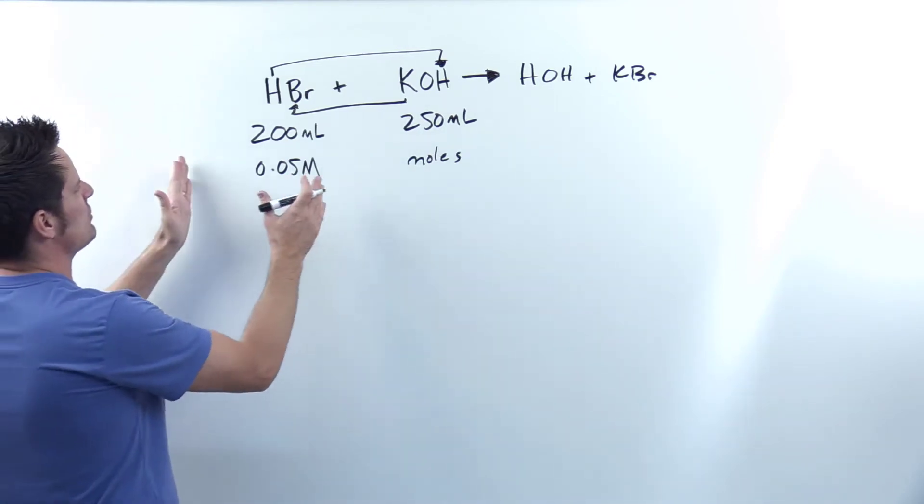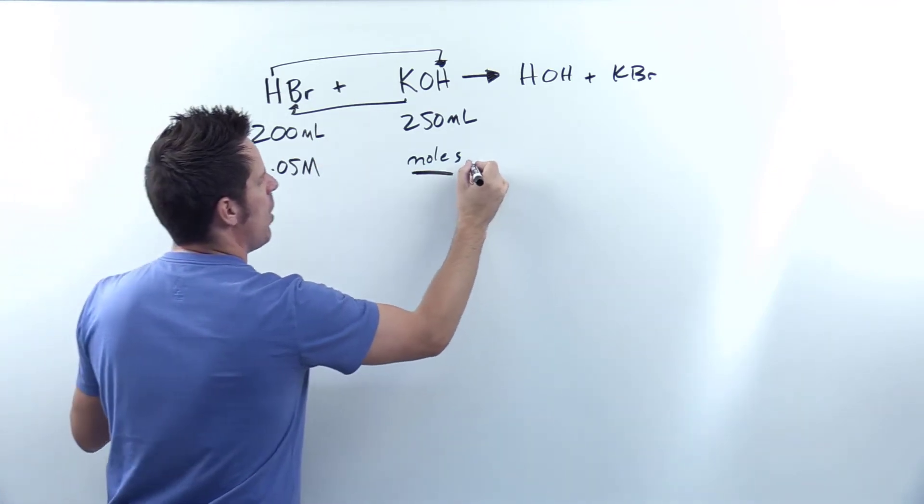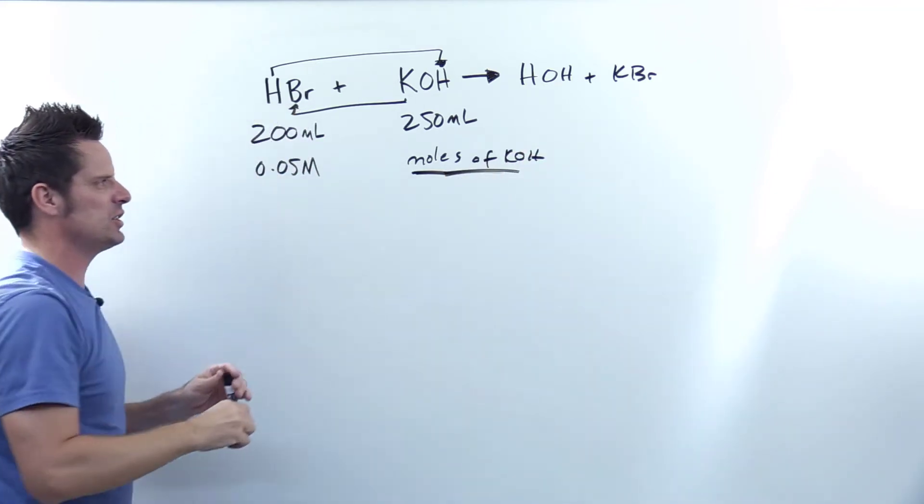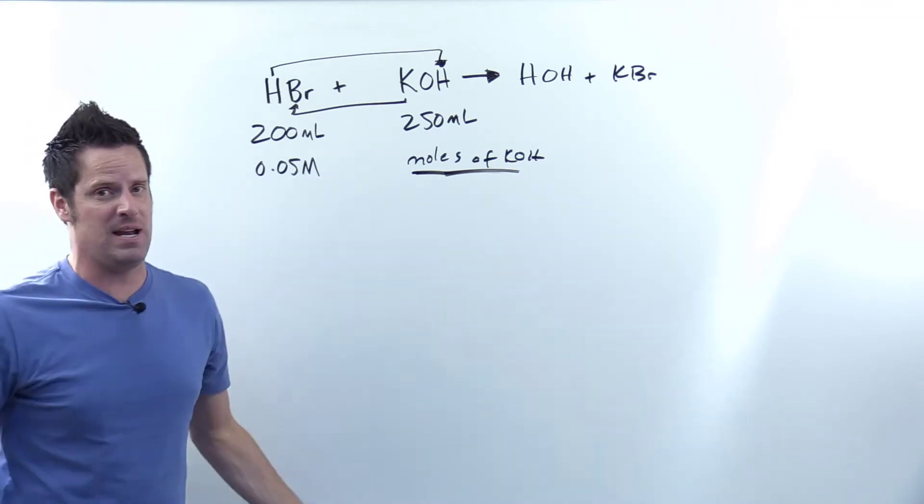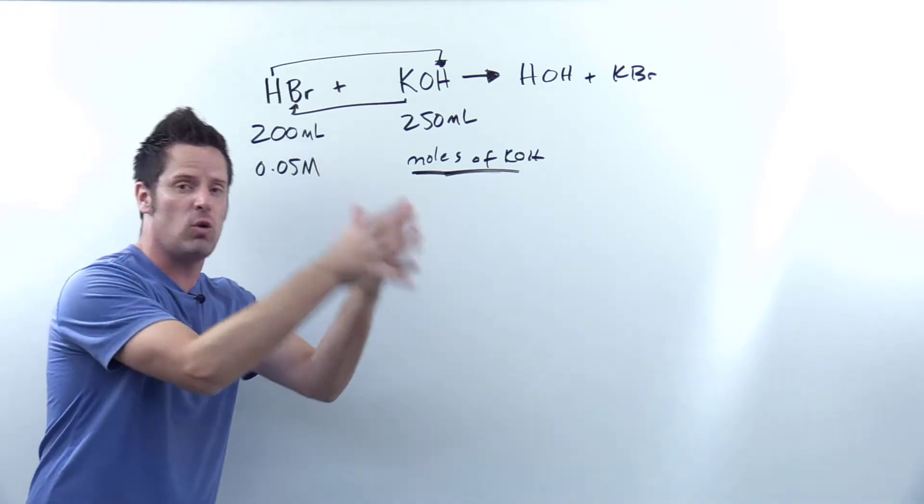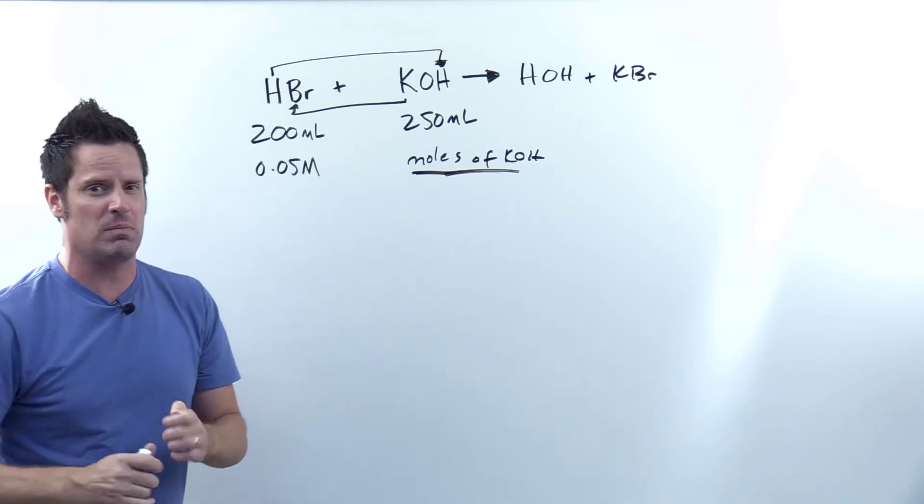Now the question gives me this many milliliters of this concentration of HBr and then asks me to eventually get to units of moles of KOH. So these are my target destination units. So given the fact that I said destination units, what do you think is going to happen here? Yeah, we're totally going to treat this as a dimensional analysis slash unit conversion equation, which principles I've talked about in an earlier video linked in the description below.